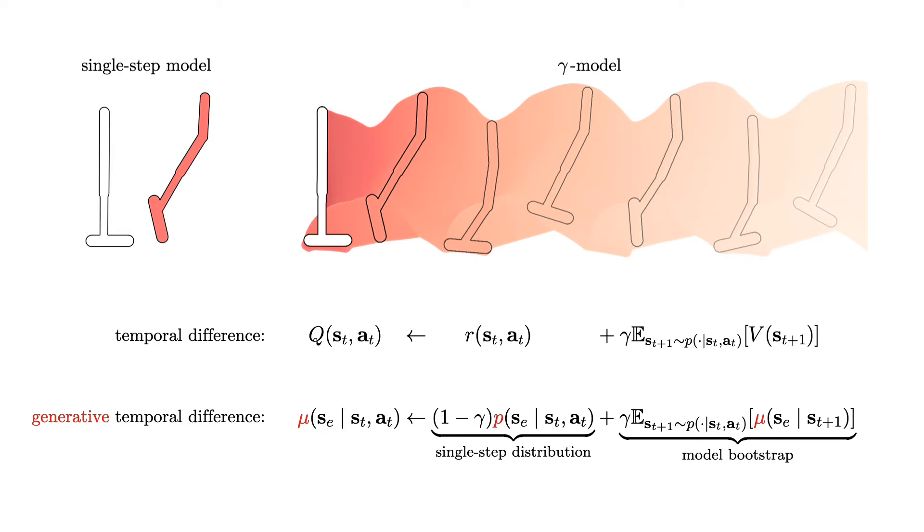The resulting model has a probabilistic horizon governed by a geometric distribution. As an analog to infinite horizon model-free control, we refer to this formulation as infinite horizon prediction, and the corresponding model as a gamma model.